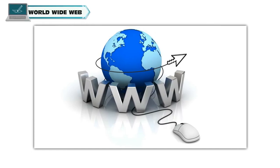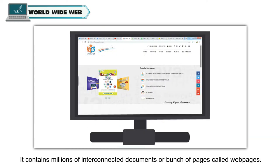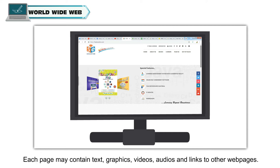World Wide Web. WWW, which stands for World Wide Web or simply Web, is a way of accessing information over the Internet. It contains millions of interconnected documents or bunch of pages called Web Pages. Each page may contain text, graphics, videos, audios and links to other web pages.